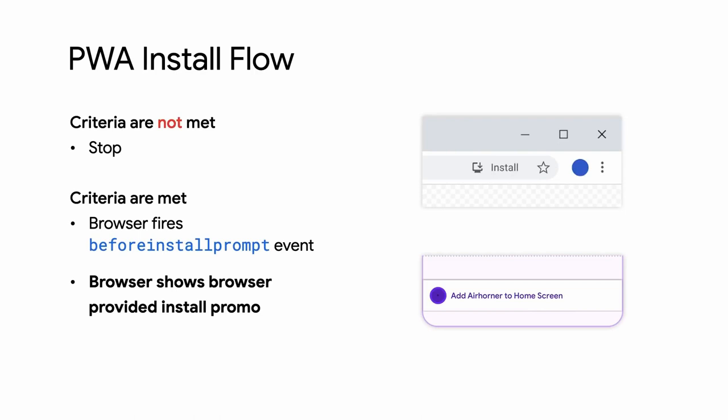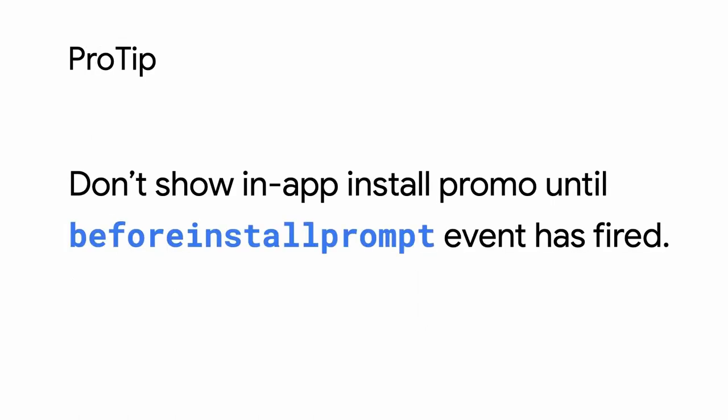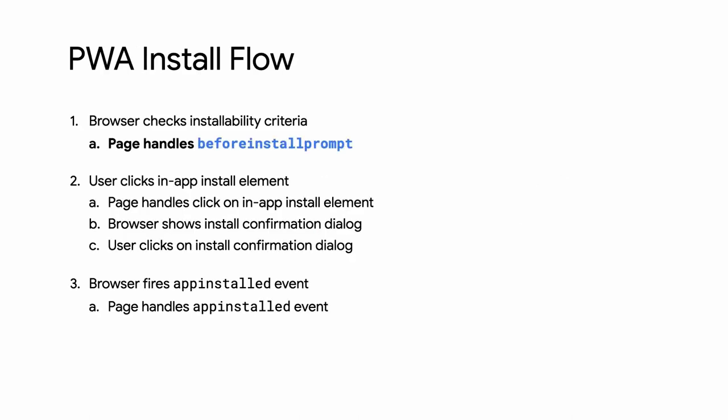The beforeinstallprompt event tells the PWA that it's installable and that it can show the in-app install experience. That's a really important point — to prevent confusion, don't show your own custom install experience until the beforeinstallprompt event has been fired. In the event handler, save the event so that it can be used later, then show the in-app install UI.